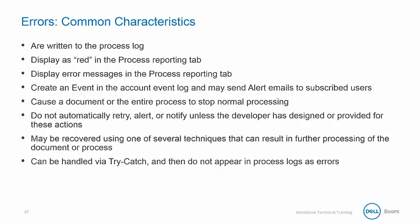Errors have some common characteristics. Errors are written to the process log. Unrecoverable errors are written to the process log after the runtime is brought back up. Errors are flagged with a red dot in process reporting and can display an error message. They will create an event in the account event log and may also send alert emails. Errors cause a document or the entire process to stop normal processing. Unless you have designed it, there is no automatic retry, alert, or notification.